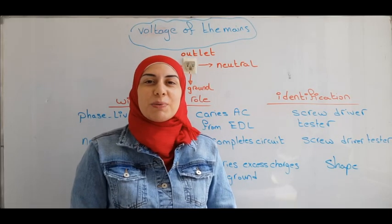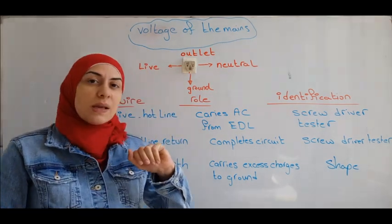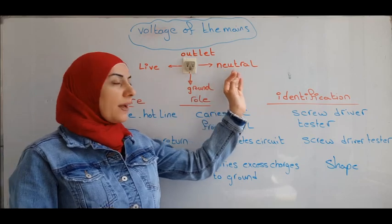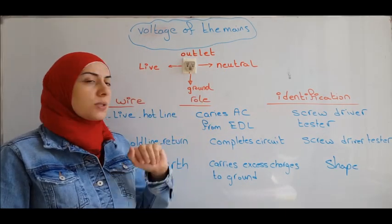Now let's take a look about the voltage of the mains. The electricity reaches you through the wires of the outlet. The outlet has two openings that look alike, which are the live and the neutral. And if you have a third one, it doesn't look like them. It is called the ground.